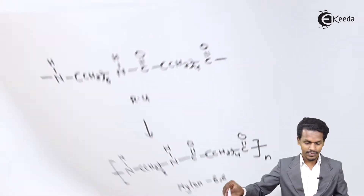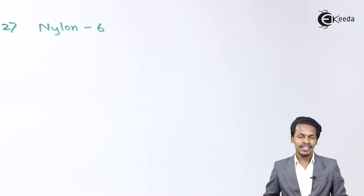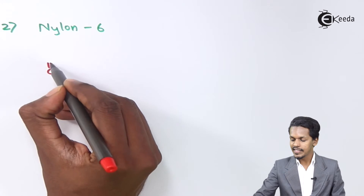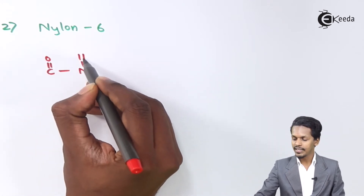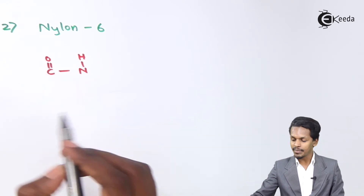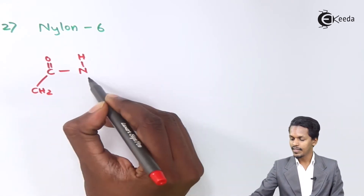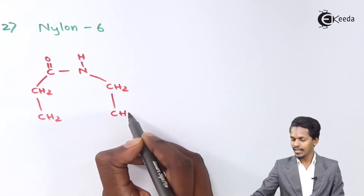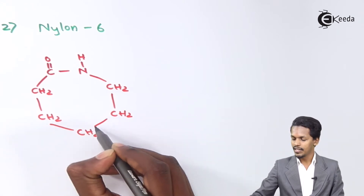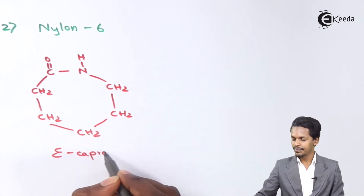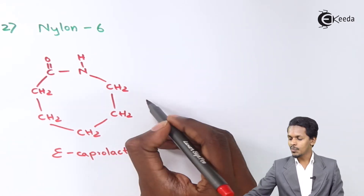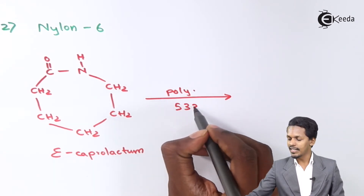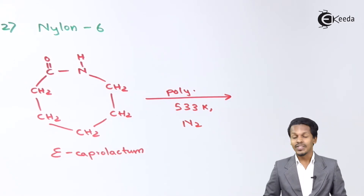Next is the preparation of nylon 6, which is prepared from the monomer known as ε-caprolactam. This monomer has a ring structure containing six carbon atoms: C(=O)-NH connected through five CH2 groups in a cyclic arrangement.